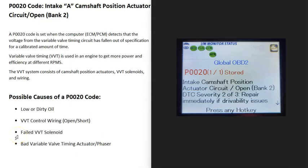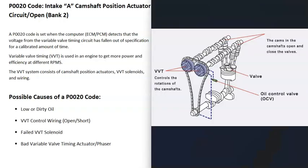Today I'm talking about a P0020 code — what it is and how you go about fixing it. A P0020 is an intake camshaft position actuator circuit open, bank 2. Most engines these days have variable valve timing, which can adjust the timing at different RPMs. This system helps the engine get more power and better fuel efficiency, but when you get a P0020 code the computer is seeing some kind of issue going on with this.